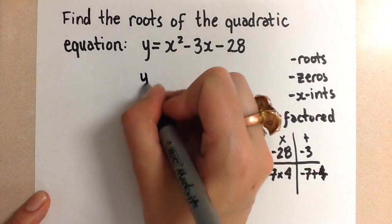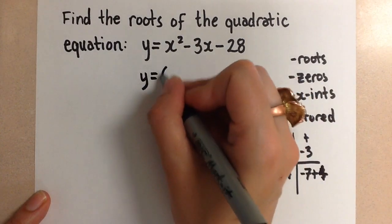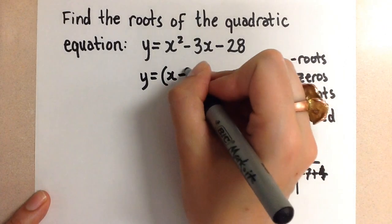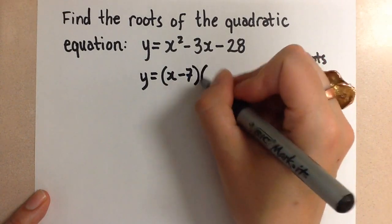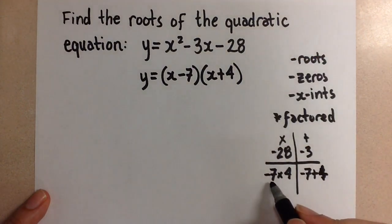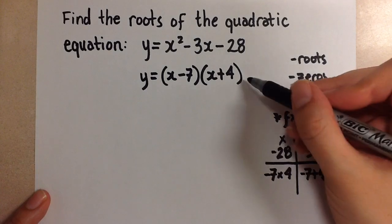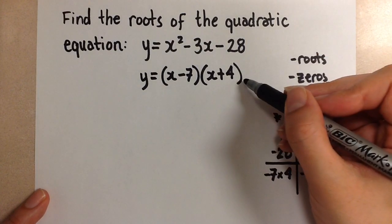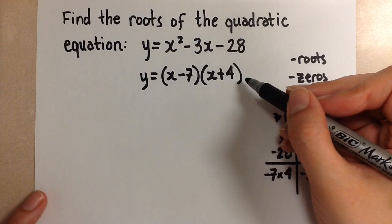So when we go over here to factor, we set up our binomial with x minus 7 and then our other binomial with x plus 4. Those came from the two factors that we came up with here. And so now we have changed the standard form quadratic equation to our factored form quadratic equation.